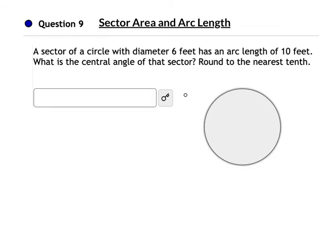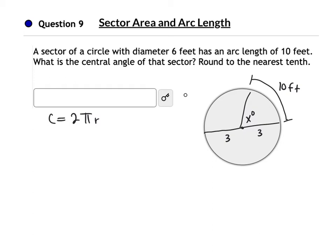A circle with a diameter of 6 feet has an arc length of 10 feet. What is the central angle of that sector? The diameter is 6, which makes the radius 3. I don't know the angle, so I'll call it x degrees. We know the arc length is 10 feet, and we're talking about circumference — 2 pi r. We take our angle over 360, which is that fraction of the circle, times 2 pi times the radius of 3, and that equals 10 feet.